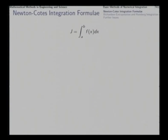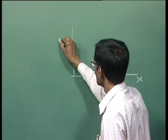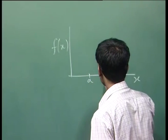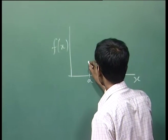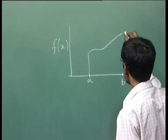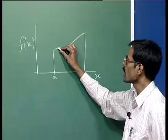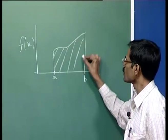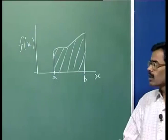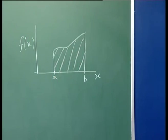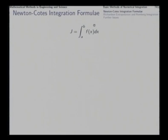As you understand, if the function is like this, then the integral of f(x) from a to b is this area. We need to find out this area, or find out the integral of function f(x) from a to b. We will start from the definition, and the numerical integration procedure basically works directly on the definition.